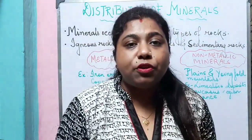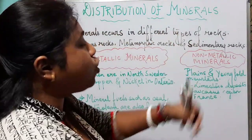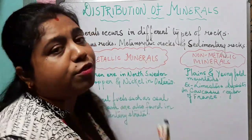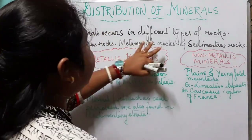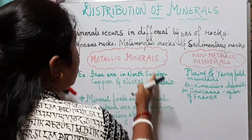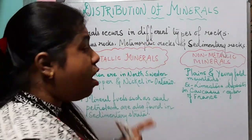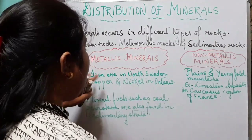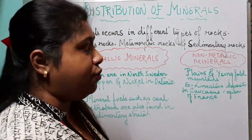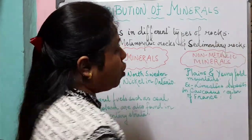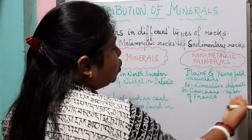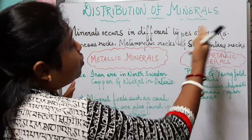Before we start with the distribution of minerals, we need to know which type of minerals occur in which type of rocks. Minerals occur in different types of rocks — igneous, metamorphic, and sedimentary. In igneous and metamorphic rocks, we find metallic minerals. For example, iron ore in North Sweden, and copper and nickel in Ontario. Non-metallic minerals occur in sedimentary rocks, in the plains and young fold mountains — for example, limestone deposits in the Caucasus region of France.